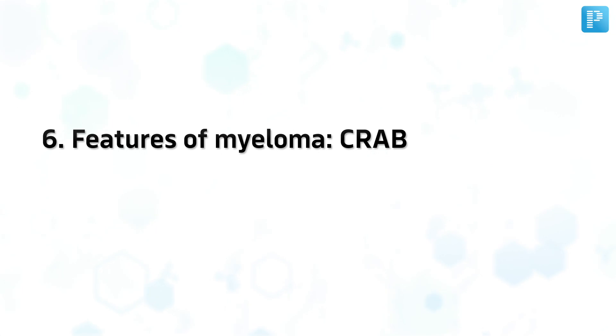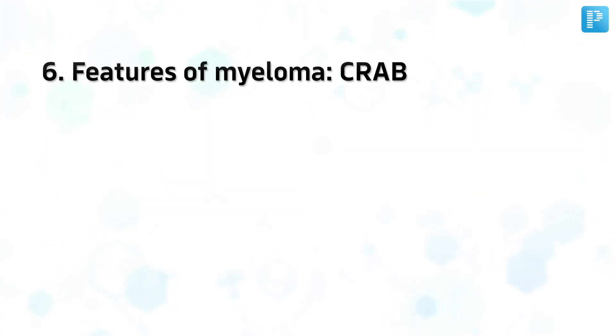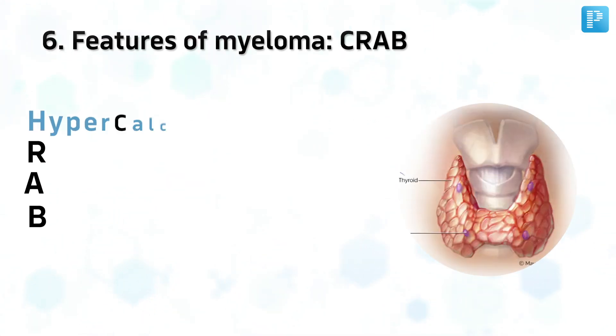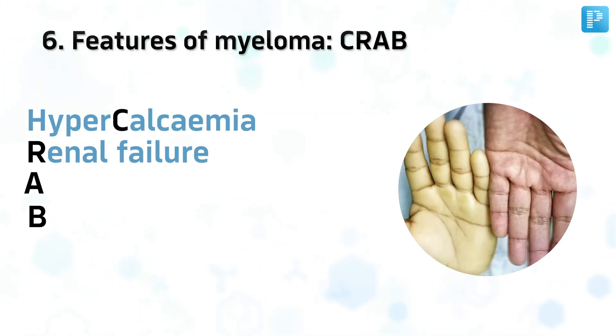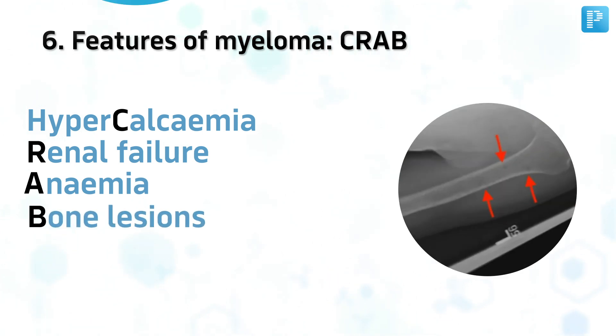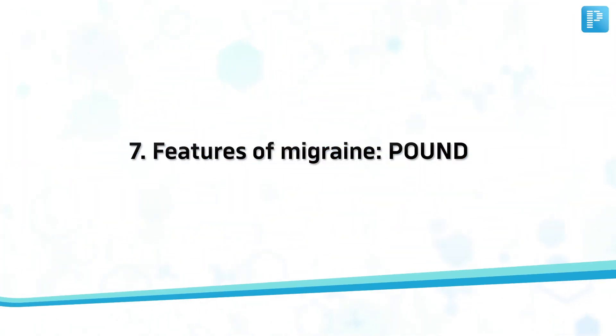Number 6. Features of Myeloma: CRAB. Hypercalcemia, Renal Failure, Anemia, Bone Lesions.